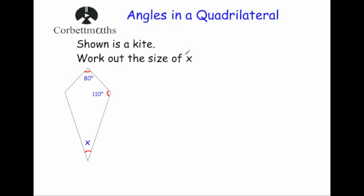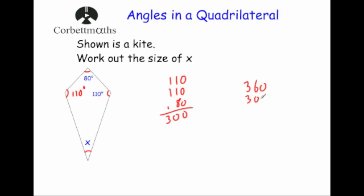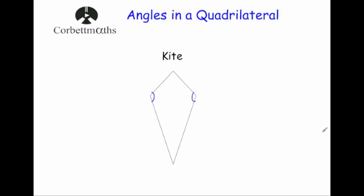The question says: shown is a kite — work out the size of x. We've been given the angle on the right-hand side as 110 degrees. As the kite has a line of symmetry, the angle on the left will also be 110 degrees. All four angles add together to give 360, so we add 110 plus 110 plus 80, which gives us 300 degrees. Therefore x is 360 minus 300, which equals 60 degrees. To recap: for a kite in an upright position, the left and right-hand angles are equal because of the line of symmetry.